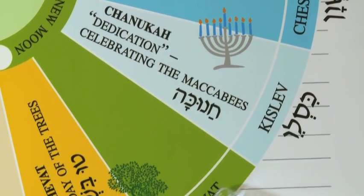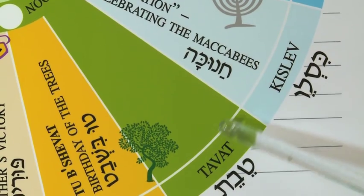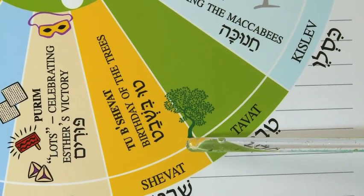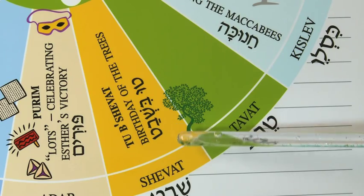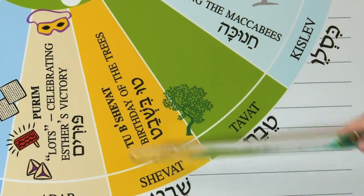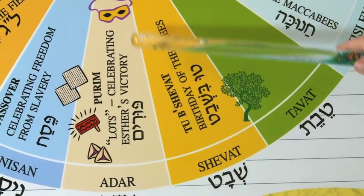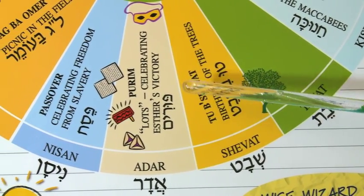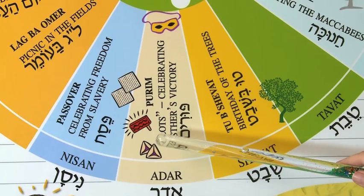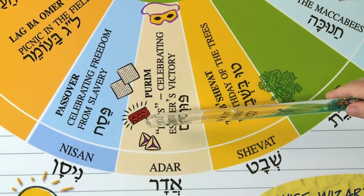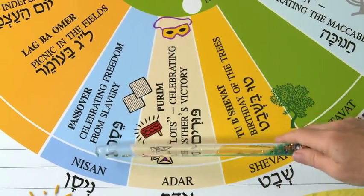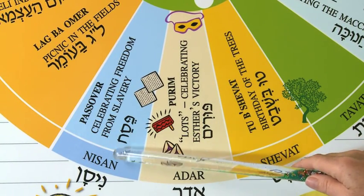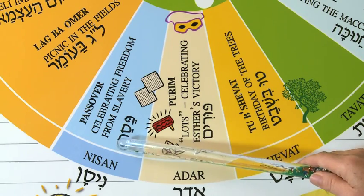Then we have the month of Tevet, and there's not much going on in that month. But in the month of Shvat, we have Tu B'Shvat, which means the 15th of Shvat, and that's when we celebrate the birthday of the trees. And in the month of Adar, we always remember Purim and Esther's victory, and there is sometimes an Adar II during our leap year Jewish calendar. Then we have the holiday of Passover, which is really in the month of Nisan — our legitimately first month of the year, Nisan, ironically so.